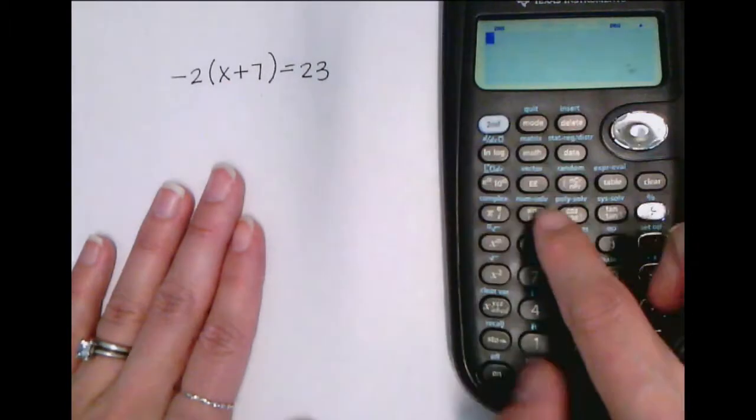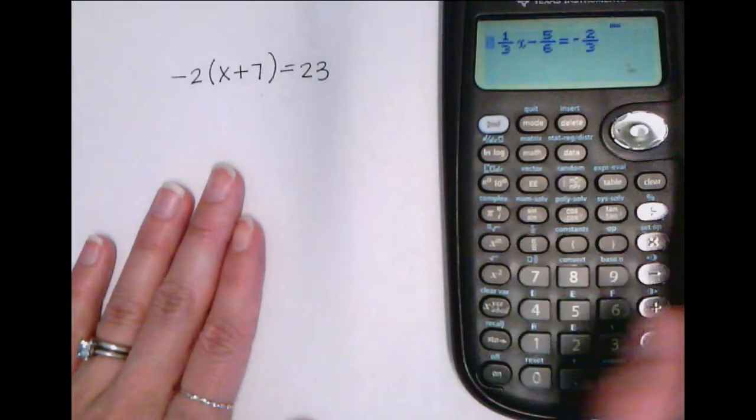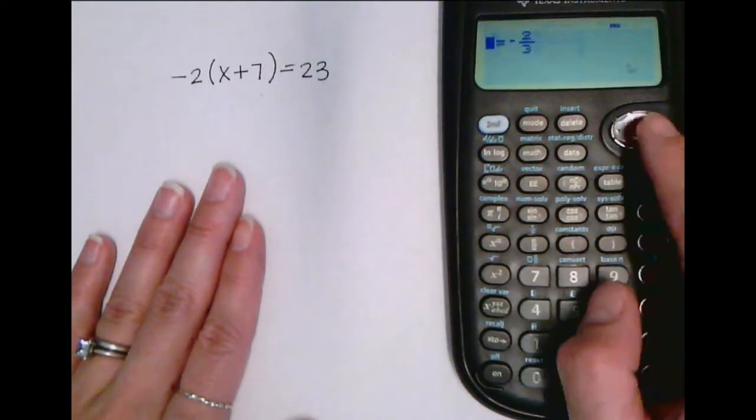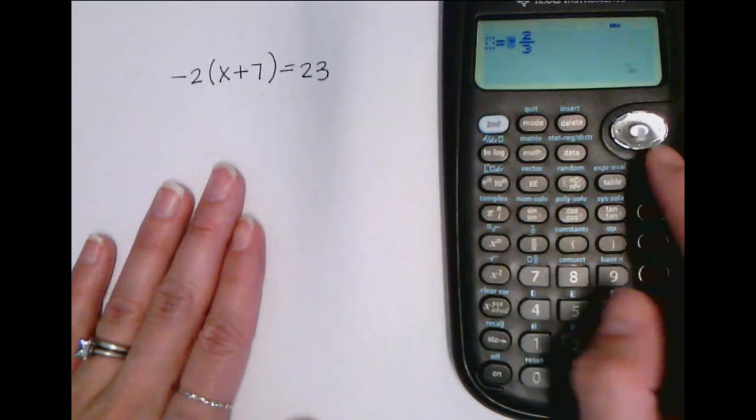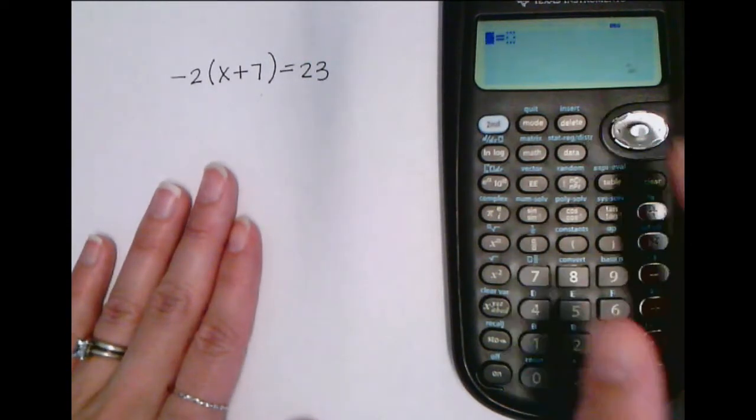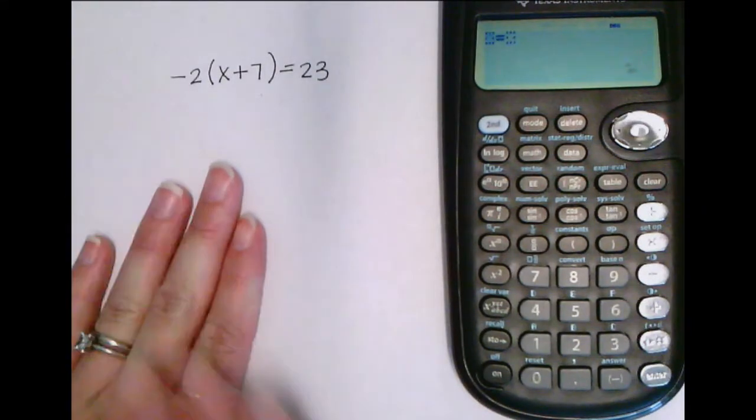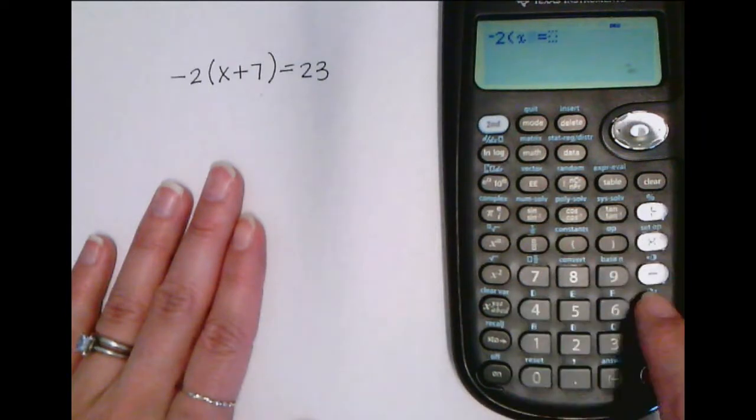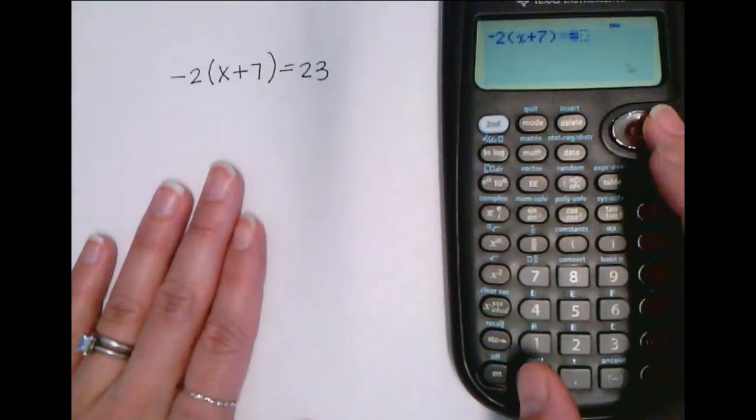So if you press second and then the sign button, it'll bring up this solver. And what it should look like in your calculator if you've never used it before for this is it'll have a box is equal to a box. And we just need to type in this equation exactly how it appears. So negative 2 parenthesis x plus 7, end parenthesis, equals 23.